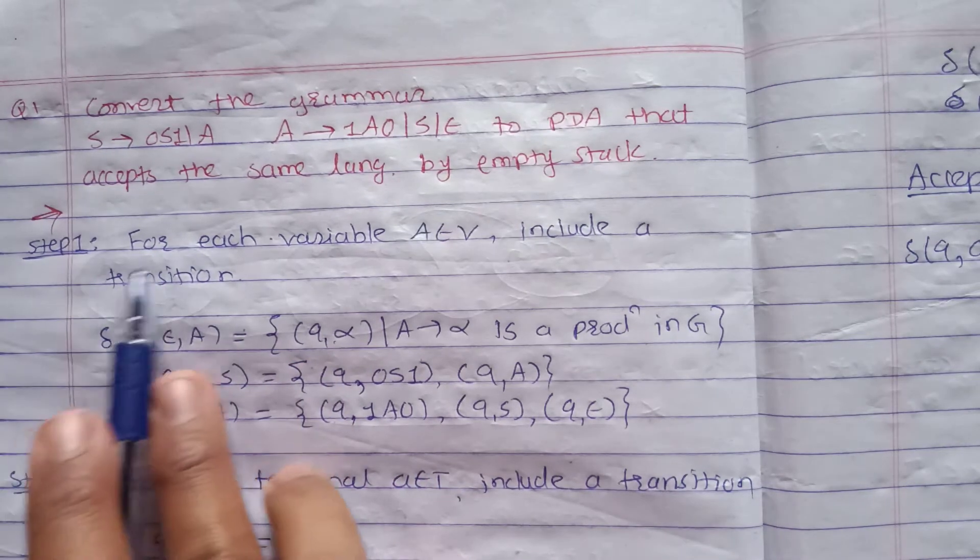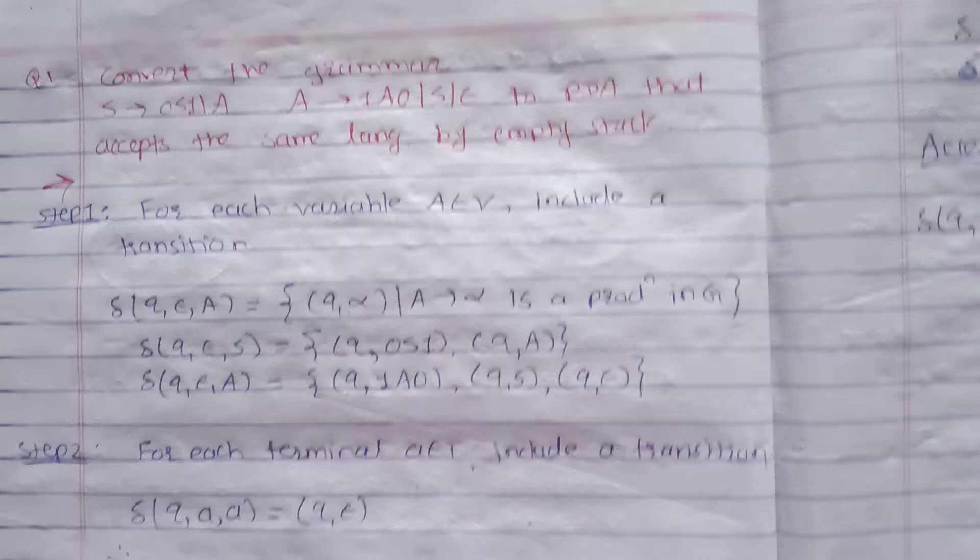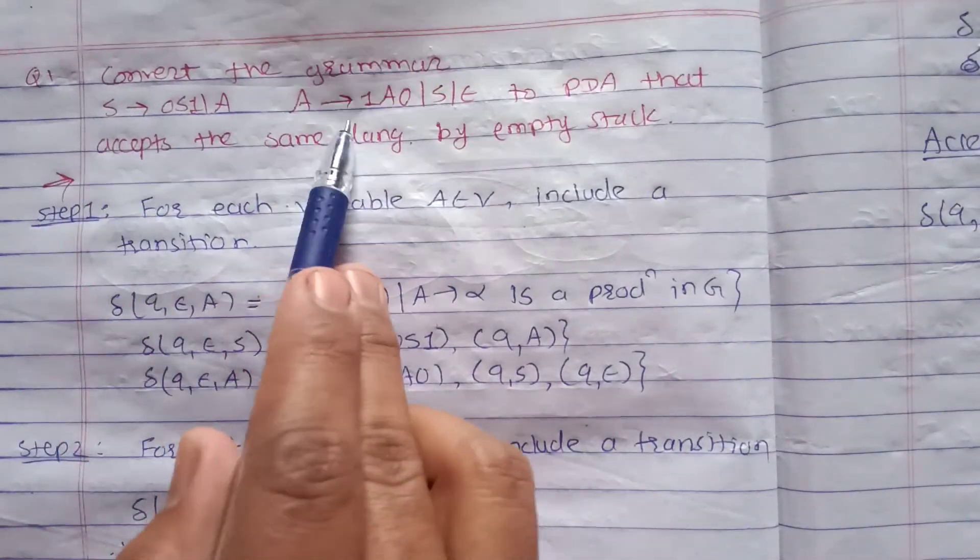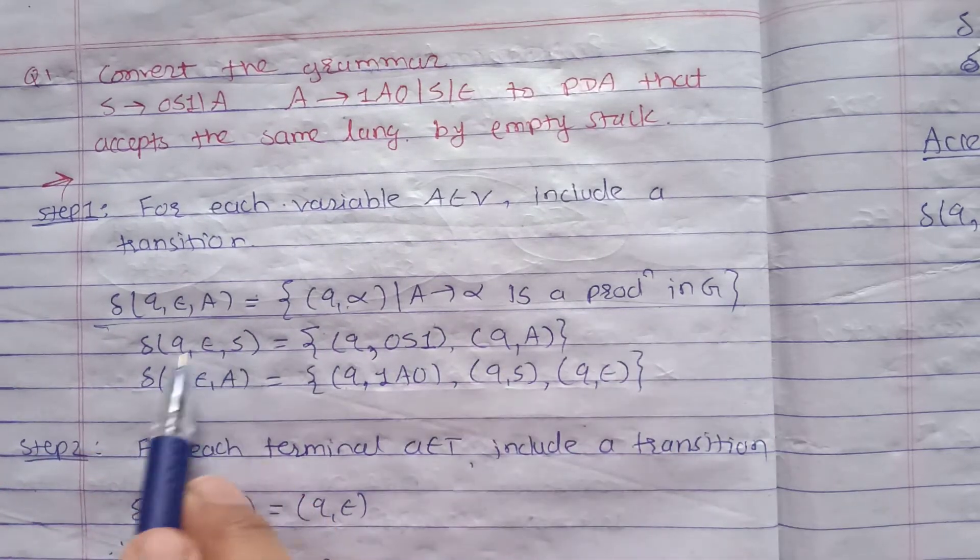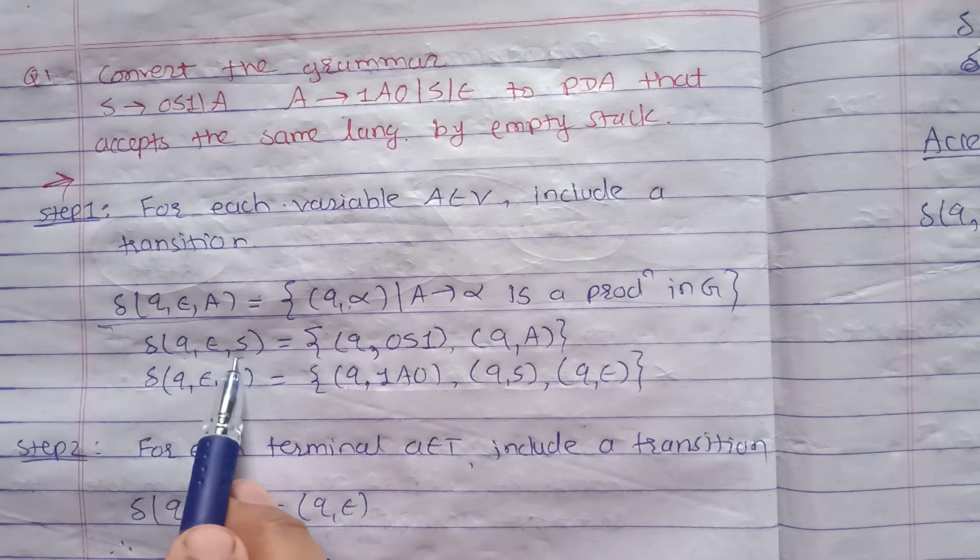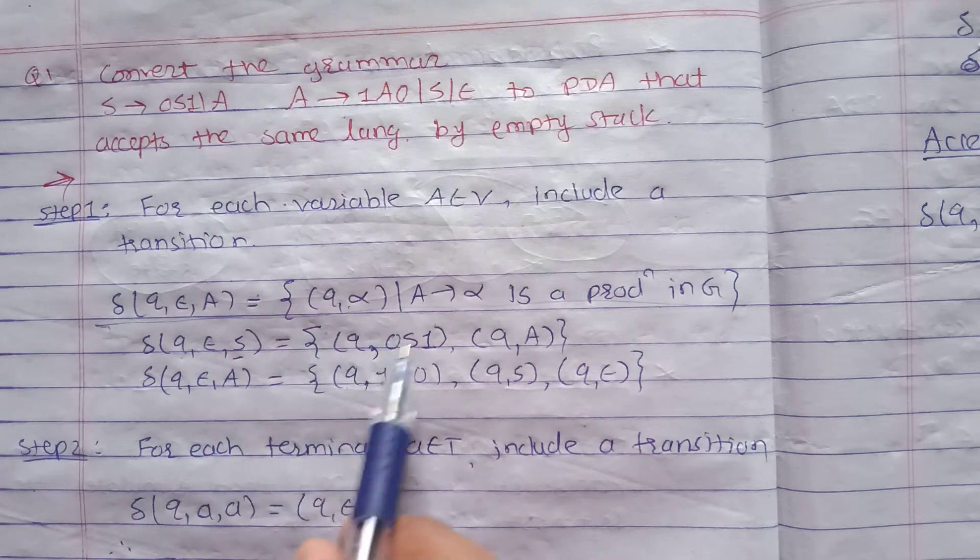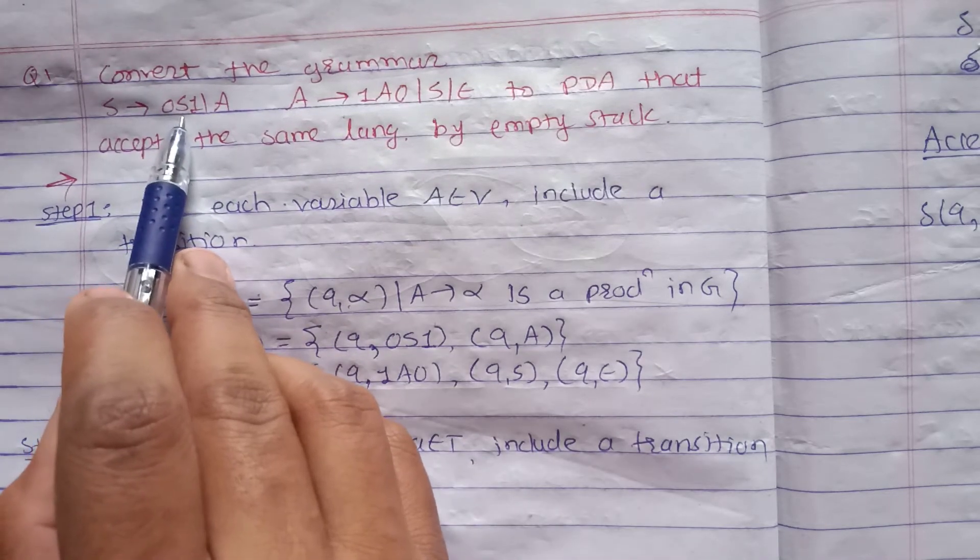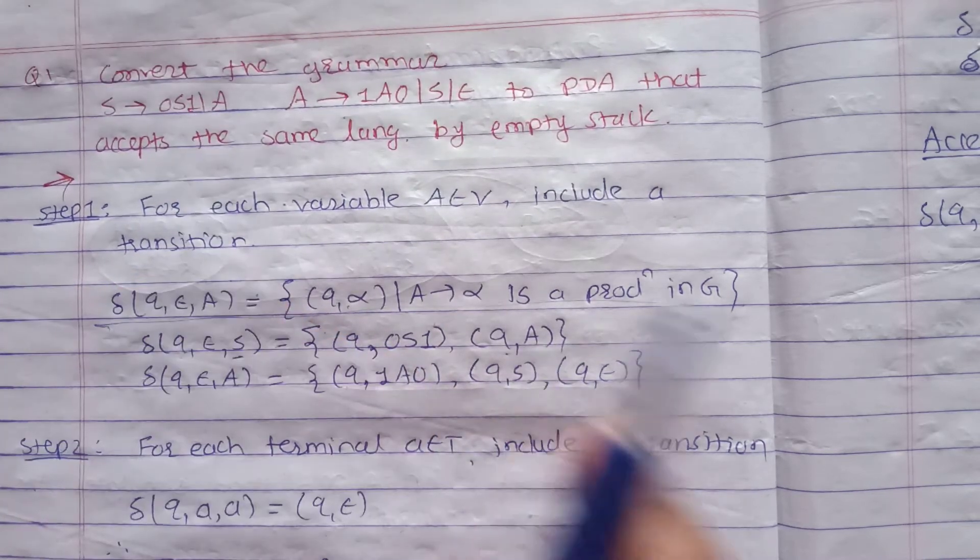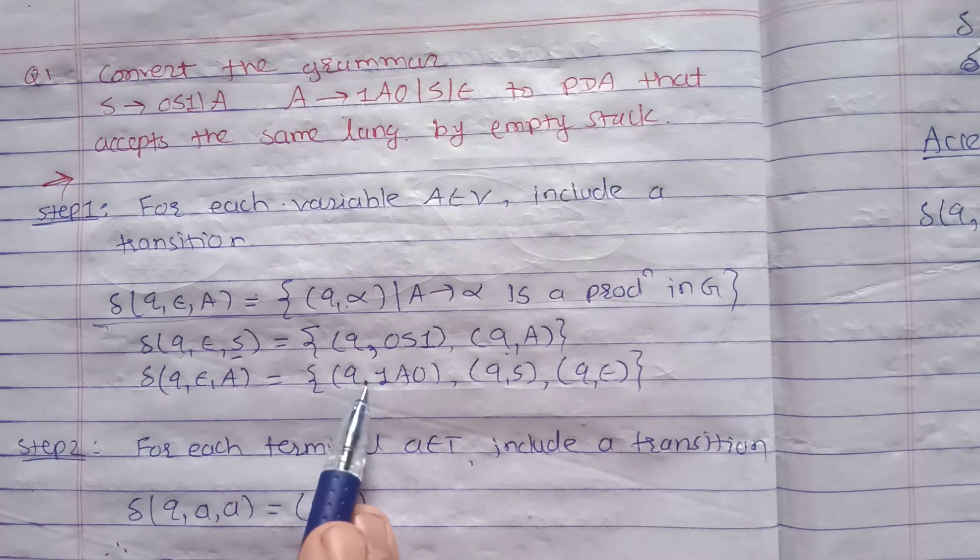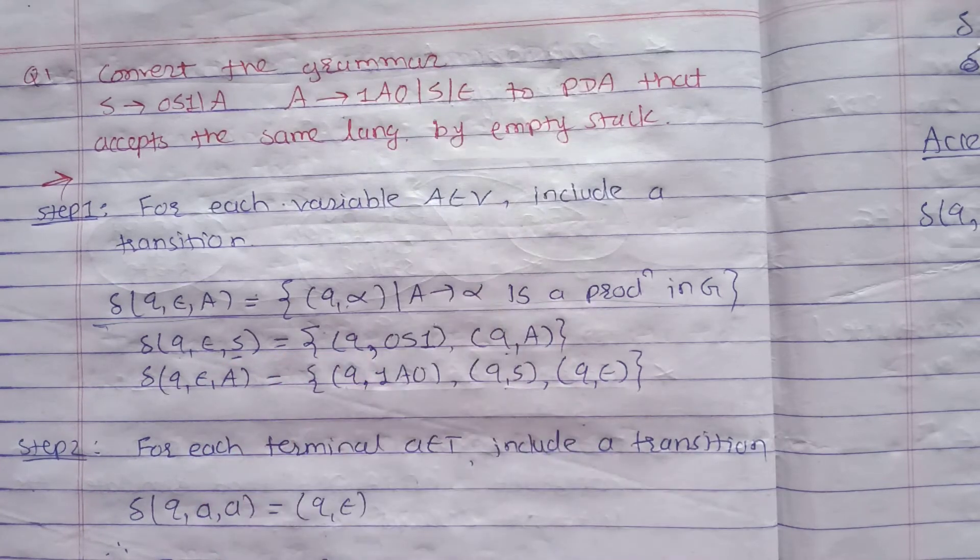First step is that for each variable A belongs to V include a transition. How many variables we have? Two variables S and A. This is the form which we have seen. δ(q, ε, S) produces (q, 0S1) and (q, A). For A's production: δ(q, ε, A) equals (q, 1A0), (q, S), (q, ε).